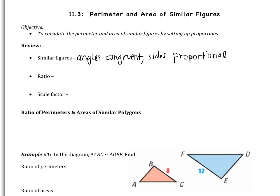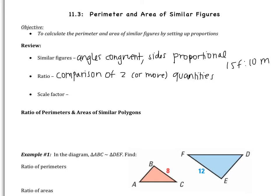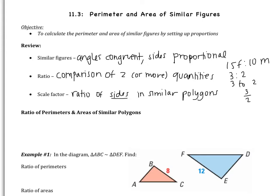That brings us to the next review point: a ratio. A ratio is a comparison of two or more quantities. For example, if there are 15 females and 10 males in a class, you simplify 15 to 10 by dividing both by 5 to get 3 to 2, meaning three females for every two males. You can write that as 3:2 or 3/2. A scale factor is the ratio of the sides in similar polygons — it's specific to geometry.